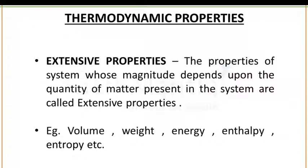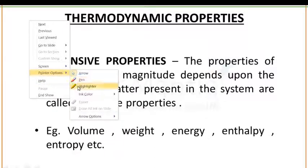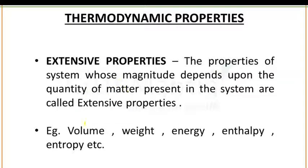Some important thermodynamic properties. Number one is extensive property: properties of a system whose magnitude depends upon the quantity of matter present in the system. Examples include volume, weight, energy, enthalpy, and entropy — all are extensive properties. You must memorize that the magnitude of extensive properties depends upon the quantity of matter present in the system.